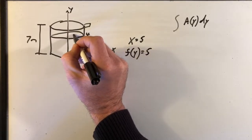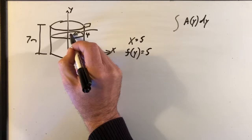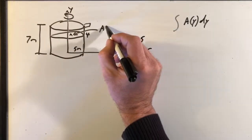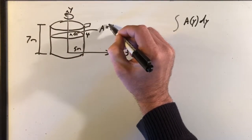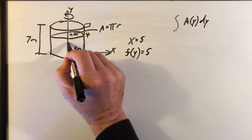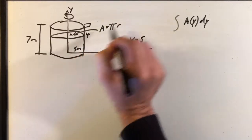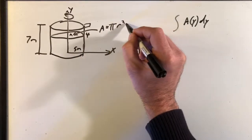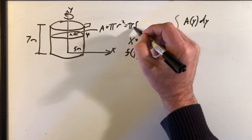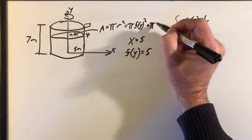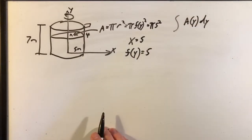The area is that circular cross-sectional face, and you're rotating around the y-axis. Because it makes a circle, it's pi times the radius squared. In this case your value of f(y) — that constant x — is your radius. So area equals π·f(y)², which is going to be π times 5 squared, giving us 25π. That makes the problem nice and simple.